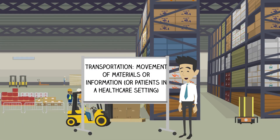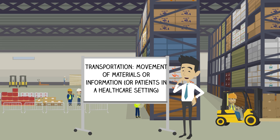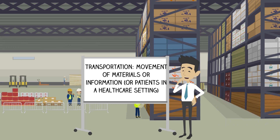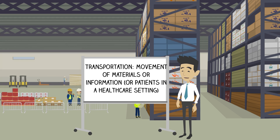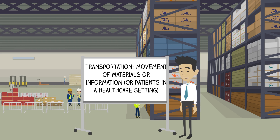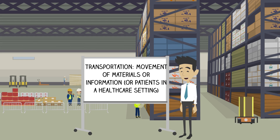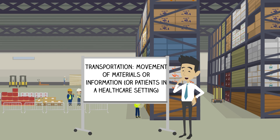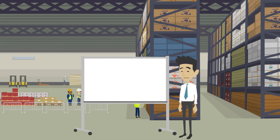Transportation is moving material or information. As we move a product from one area within a facility to another, the product is not any more valuable than it was before it was moved. Obviously there must be some movement of material and information, but lean thinkers must work to minimize the amount of transportation. One useful way of thinking of transportation in terms of information is to consider handoffs between departments or individuals as a form of transportation.